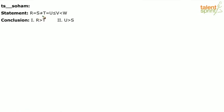Here's the first question, posted by Soham, and this is from coded inequalities. A very interesting statement: R is equal to S, but S is not equal to T, which is equal to U, less than or equal to V, less than W — and there are two conclusions.